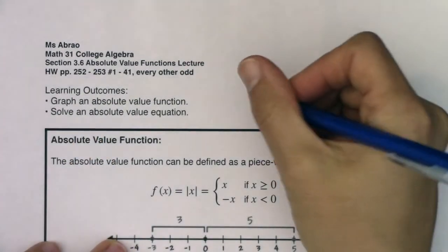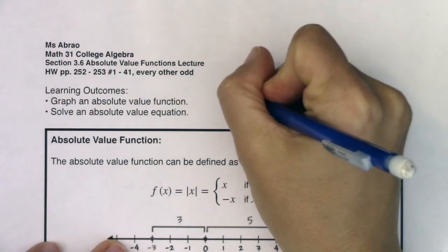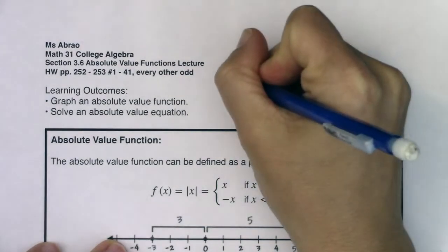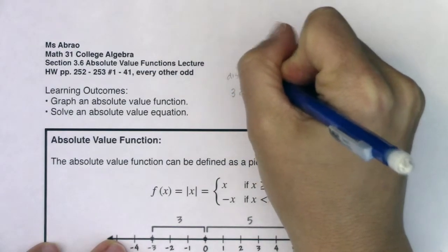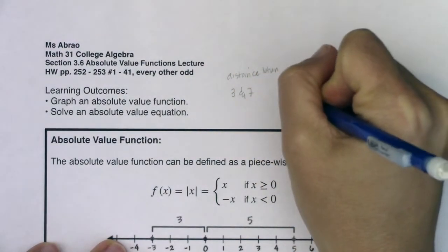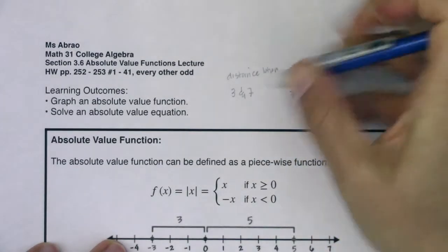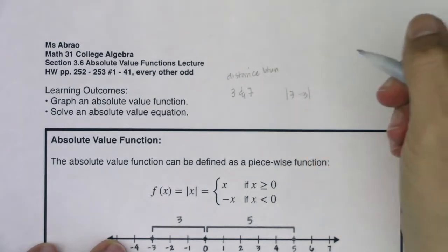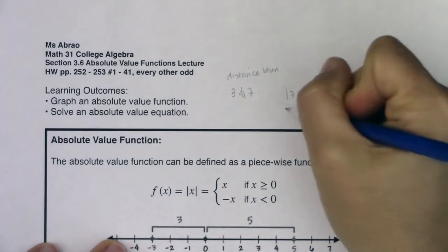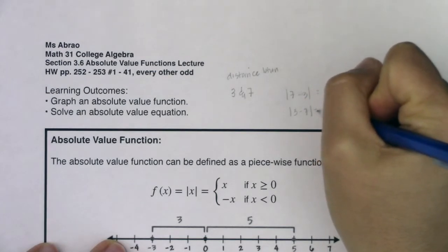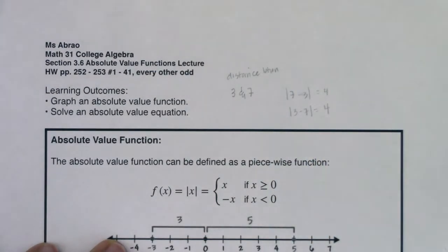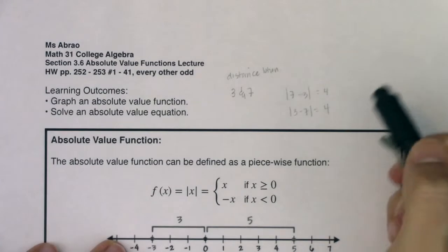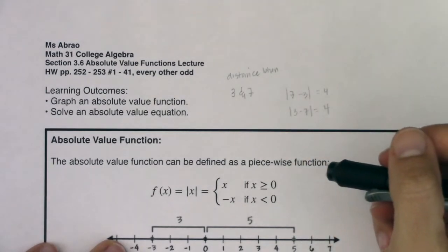Absolute values are always talking about the distance between two numbers. If I asked, what is the distance between the numbers three and seven? What we always do is subtract those two numbers and take their absolute value. The absolute value of seven minus three is four. And if you had subtracted them in the other order, you would have still gotten four. So absolute values are always positive because we just care about distances from our center, which is typically zero.